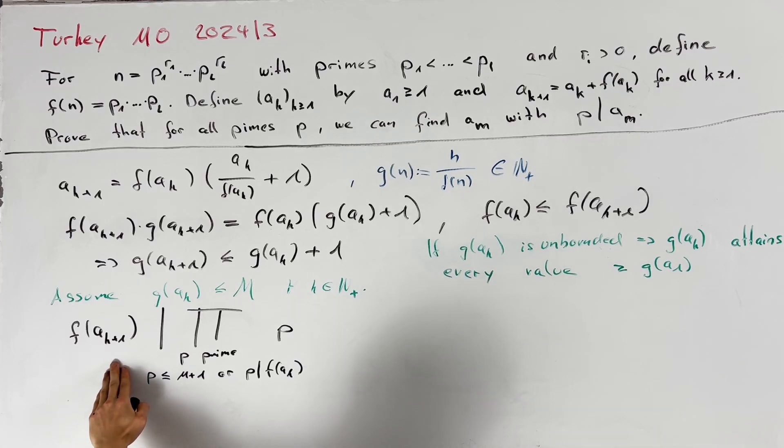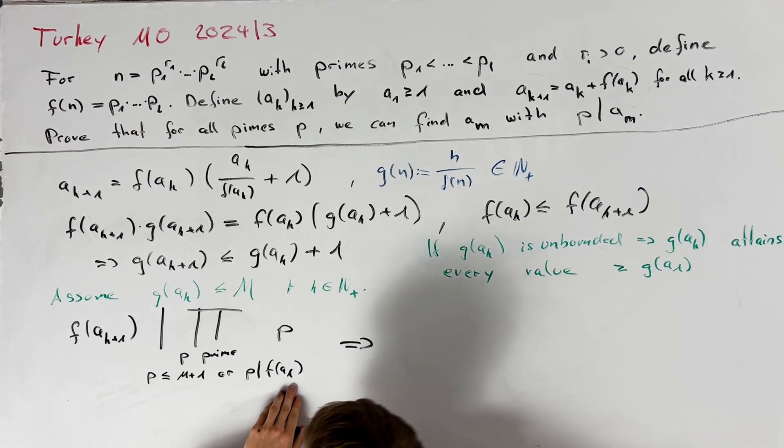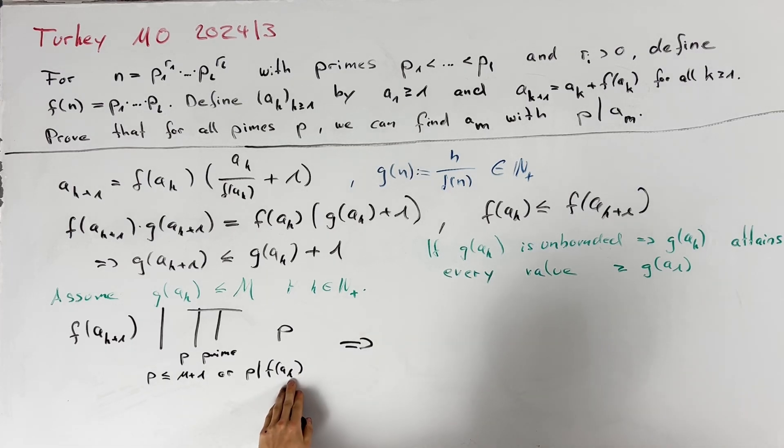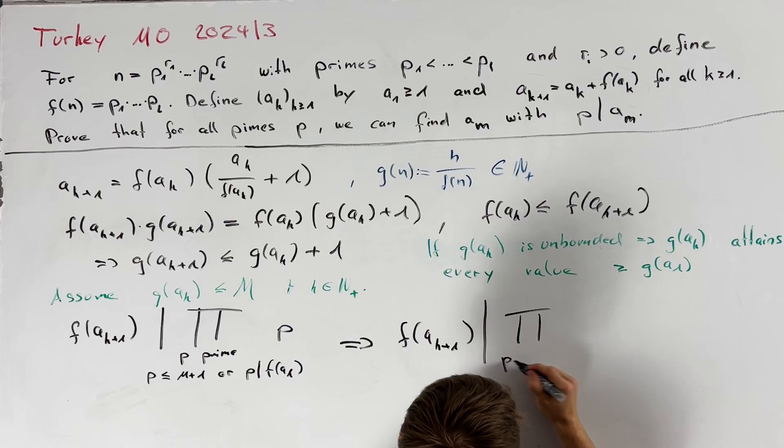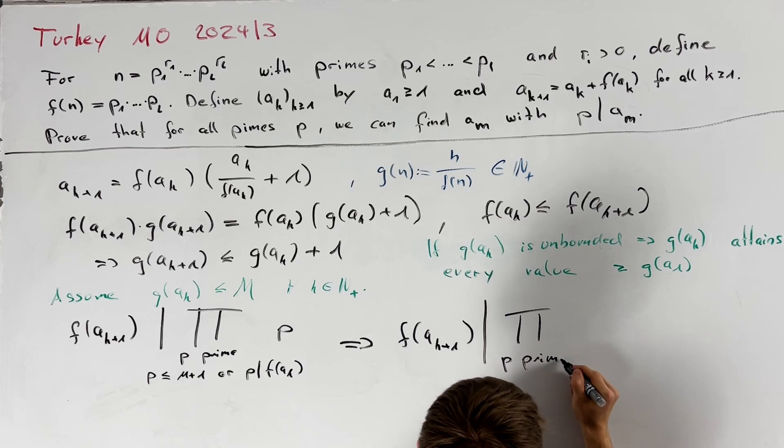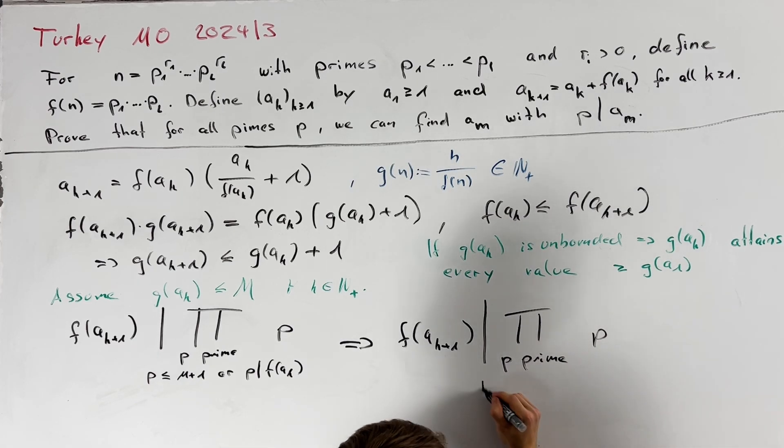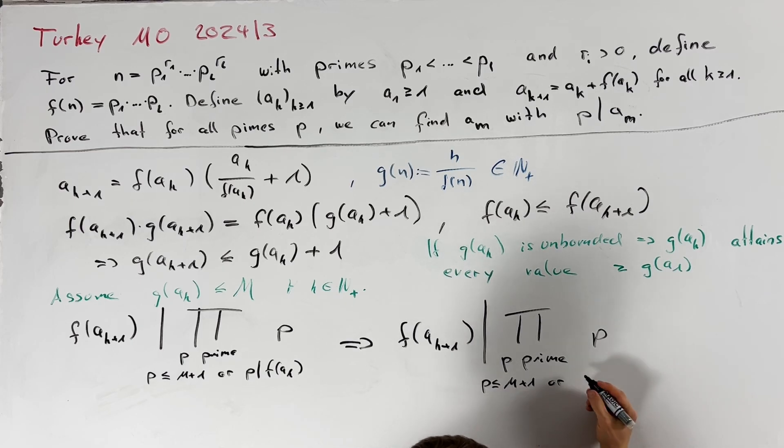So f of a_{k+1} divides the product over primes p satisfying p less than or equal to m plus 1 or p divides f of a_{k-1}. By recursively applying this argument we can also get that this statement here is true if we replace the k minus 1 here.